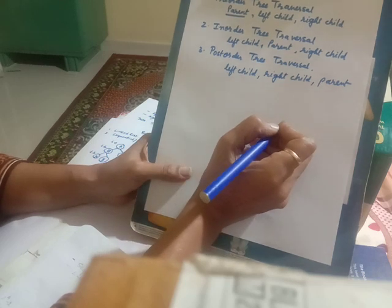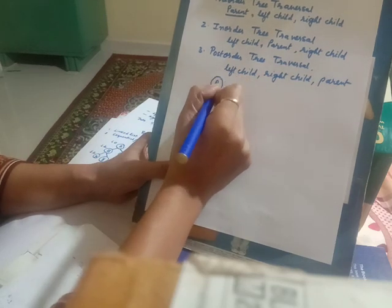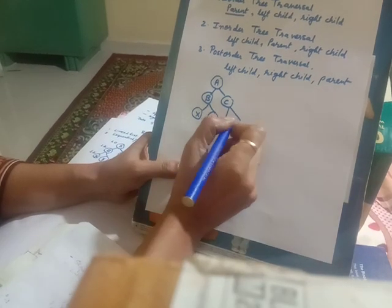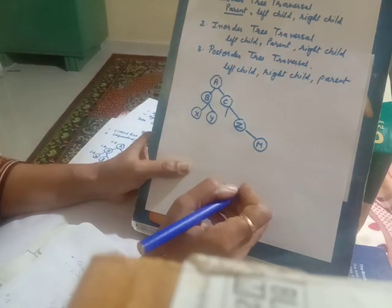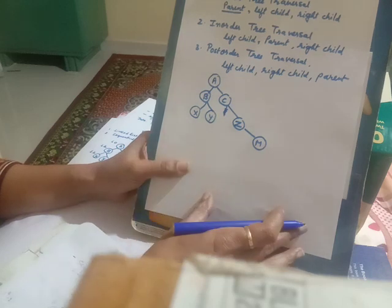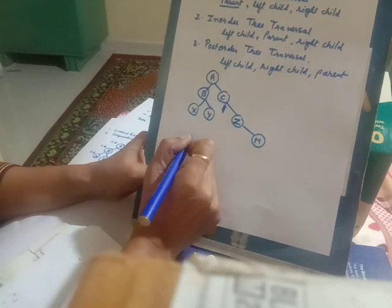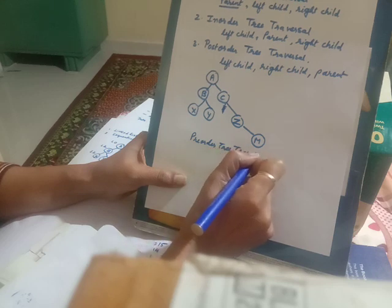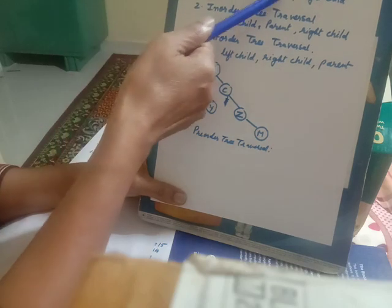We will try to perform the three kinds of tree traversal on a given binary tree: A, B, C, X, Y, Z, M, where C doesn't have a left child. First we will perform pre-order tree traversal. In pre-order, the parent has to be processed before the left child and the right child. We always start from the root node, which is itself a parent and should be processed first.